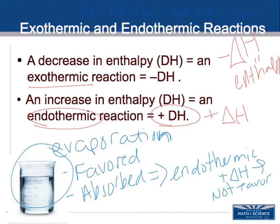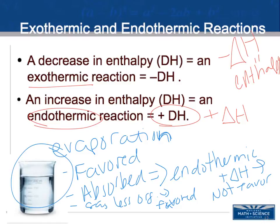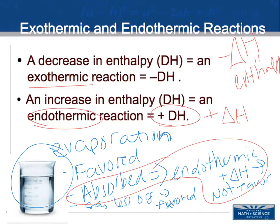But we know it occurs, so it must be favored somehow. Water in a gas form is less organized than liquid water, and that increase in entropy is favored — it's a law of thermodynamics. So the entropy factor outweighs the unfavorable enthalpy, and evaporation still occurs even though it is an endothermic reaction with a positive delta H.